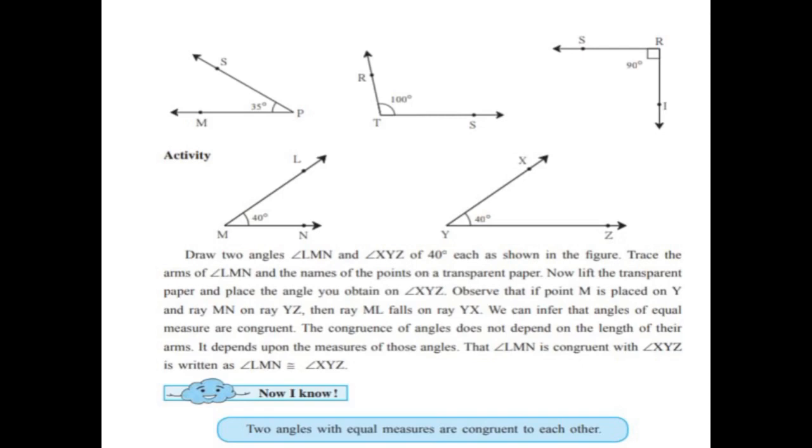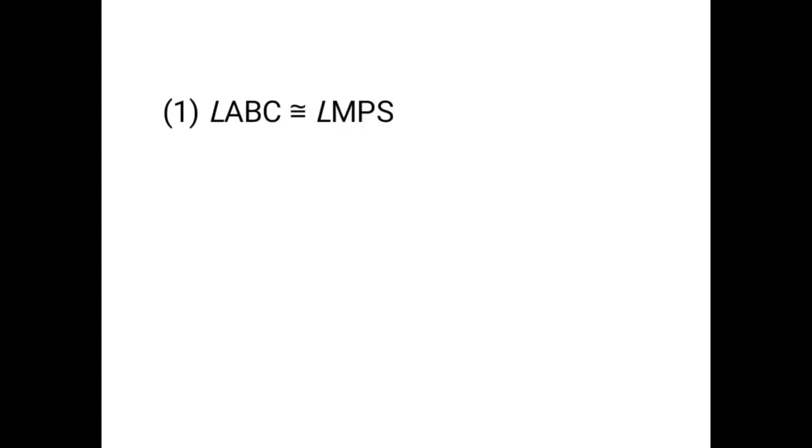Angle ABC and Angle MPS are having equal measures of 35 degrees. Angle ABC is congruent to Angle MPS.